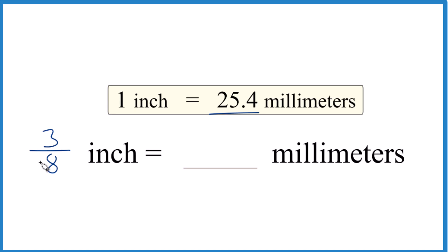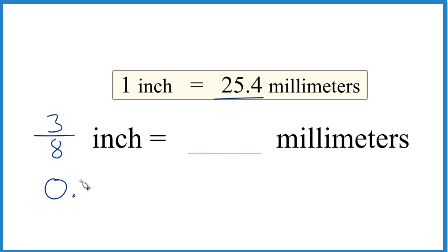It's probably easier to convert 3 eighths of an inch to a decimal though. So let's divide 3 by 8. We end up with 0.375, and those are our inches. We want to get that to millimeters,